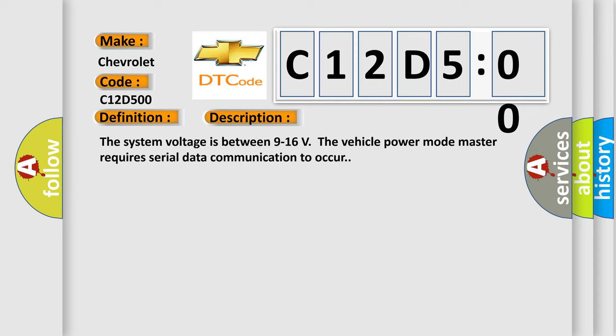The system voltage is between 9 to 16 volts. The vehicle power mode master requires serial data communication to occur.